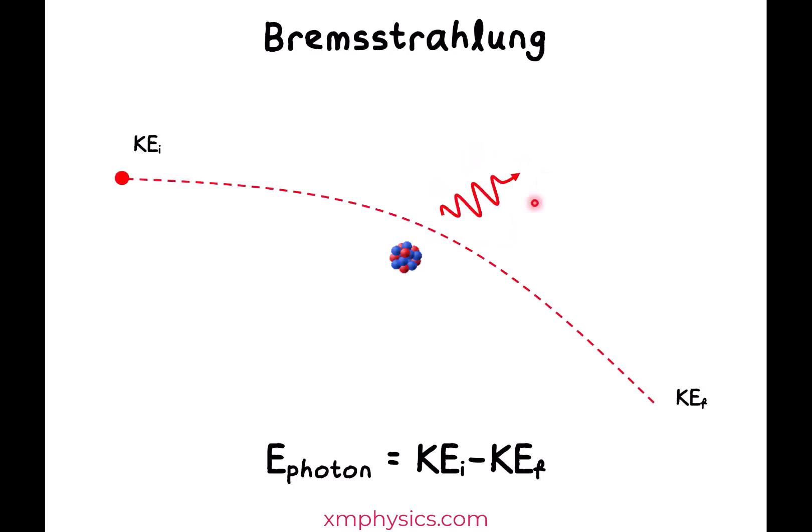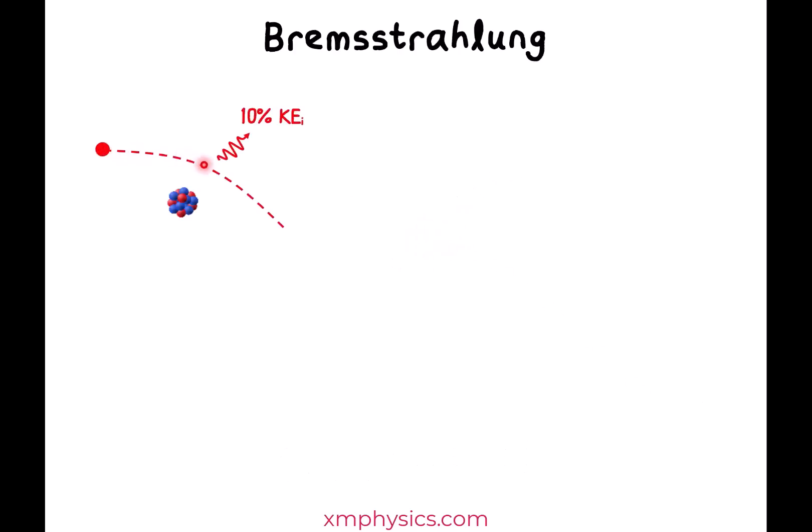Now what determines the energy of this photon? It depends on how strong the acceleration is. So if the tube electron doesn't get that close to the nucleus, it may lose just 10% of its initial KE, and therefore the energy of the X-ray photon will be 10% of the initial KE. If the tube electron gets closer and therefore experiences even stronger acceleration, then maybe this electron will lose 50% of its initial KE, meaning the X-ray photon will have 50% of the initial KE. If it manages to get even closer and experiences even stronger acceleration, then maybe the tube electron will lose 90% of its KE to become the energy of the X-ray photon.